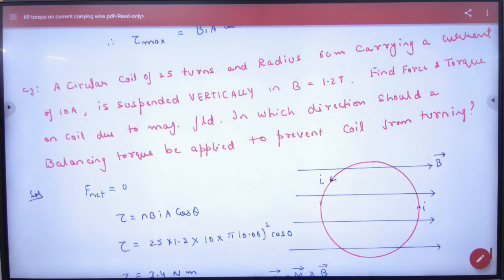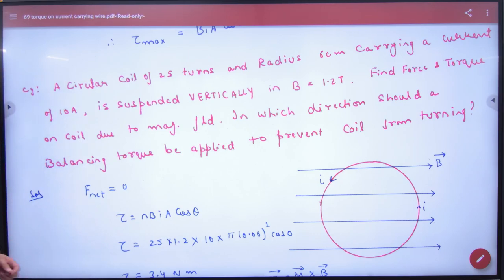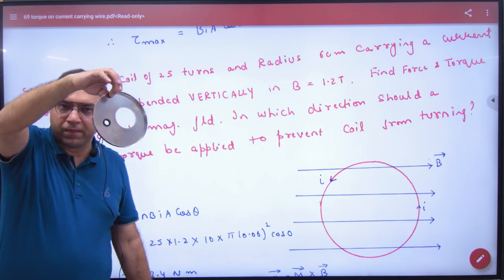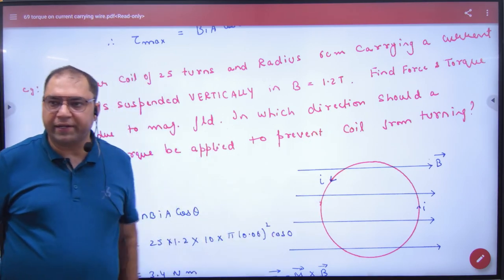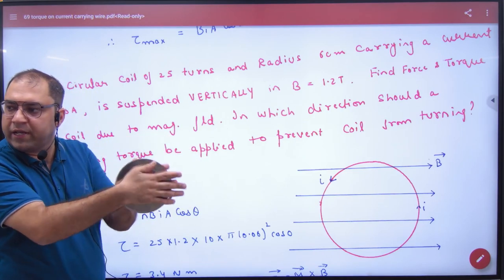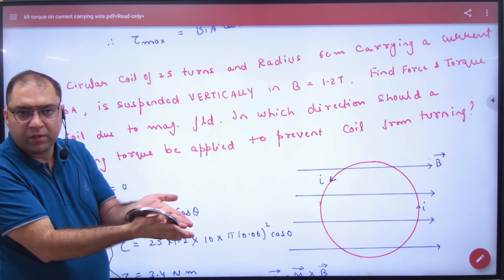Circular coil of 25 turns n given, how much radius is given, 6 cm given, carrying a current of 10 ampere given, is suspended vertically in B equals 1.2 tesla. Suspended, understand it? It got aligned like this. Vertical. So it got aligned such that B is aligned with magnetic field or loop in a plane. So loop has what made with B angle? Zero. So what will torque? Maximum. So N B I A cos zero.